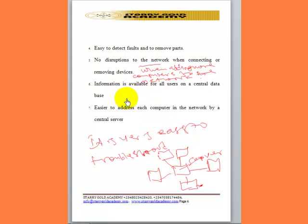Another advantage is that information is available for all users on the central database. The network server serves as the central database, which means information needed by all users is available on this central server, and any computer that has access to the server will be able to benefit from that data or facilities.